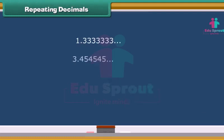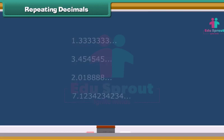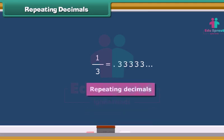Some decimals don't stop and go on adding numbers to the right forever. Look at the decimal of the fraction 1 by 3. It starts with 0.33333 and just keeps going on and on. So these decimals are termed as repeating decimals. You can round off the number, but it is more accurate to put a line over the last number, which indicates that the number keeps on going.